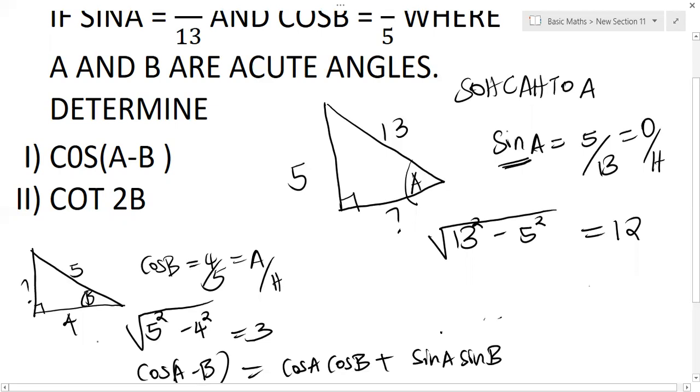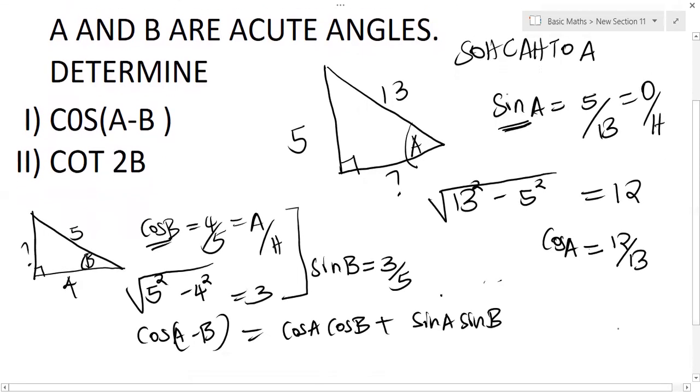So opposite over hypotenuse, the opposite here we got it to be 3 over hypotenuse 5. And what is our cos A? So cos A is equal to, cos is adjacent over hypotenuse, so the adjacent is 12, hypotenuse is 13.